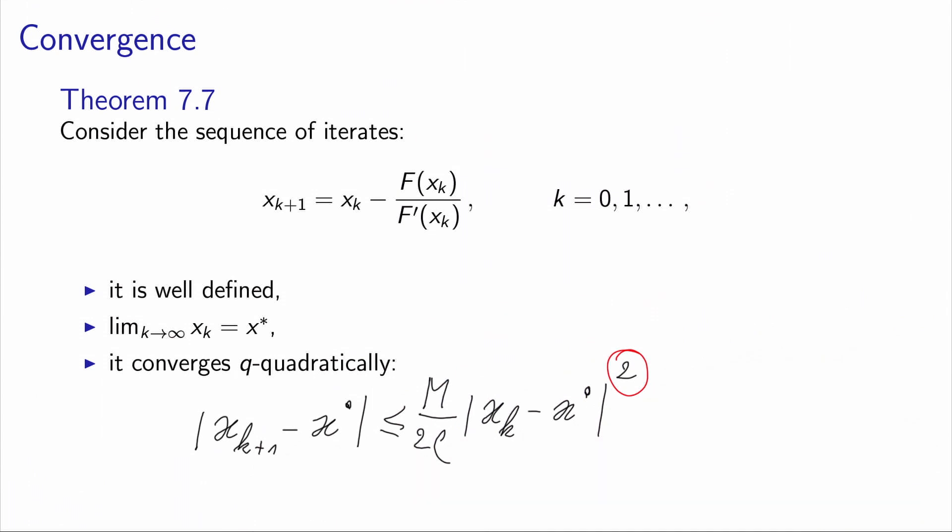The influence of parameter rho goes in the other direction because it appears in the denominator. When rho is big — meaning the derivative of f is very far from zero — we will have fast convergence. When rho is small — meaning the derivative of f is close to zero — it slows down the speed of convergence.